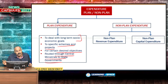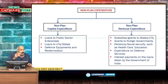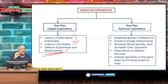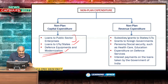Non-plan expenditure is categorized into non-plan revenue and non-plan capital. Non-plan capital includes loans to public sector enterprises, loans to union territories and states, and purchase of new defense equipment and modernization. Purchase of defense equipment and modernization comes under non-plan capital expenditure. This is the present classification, but it will not be in vogue from the next financial year.